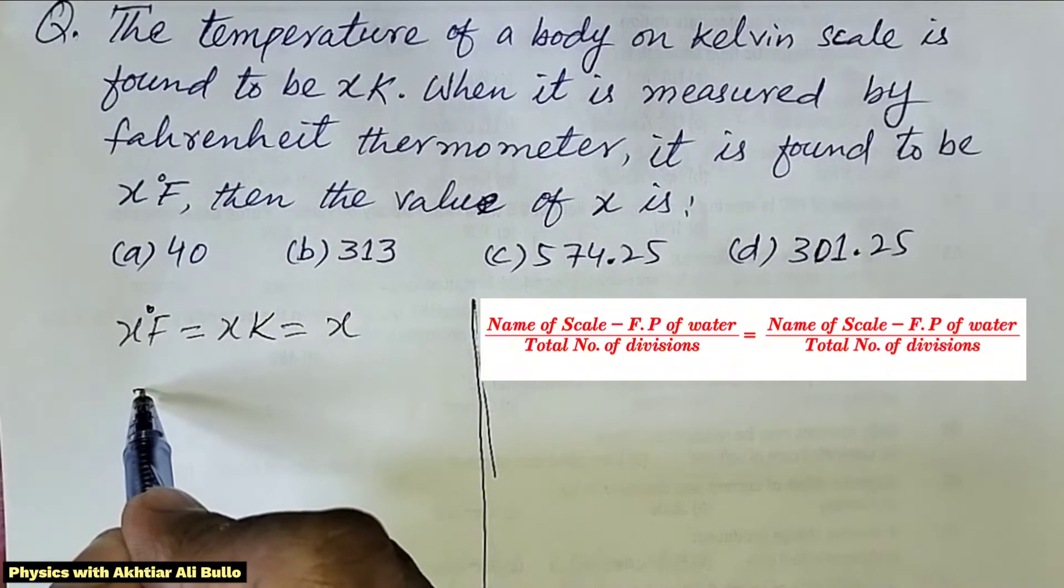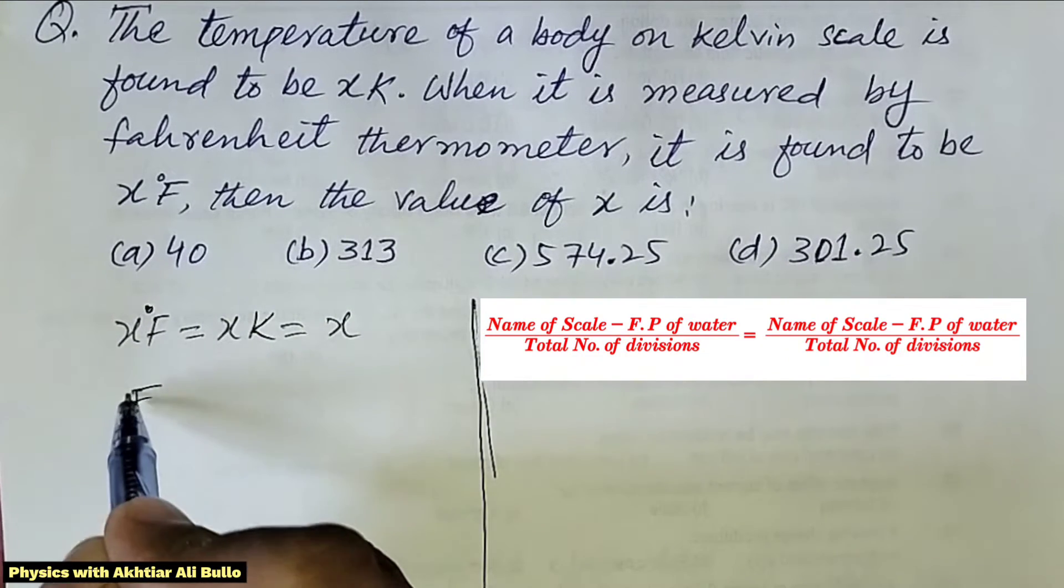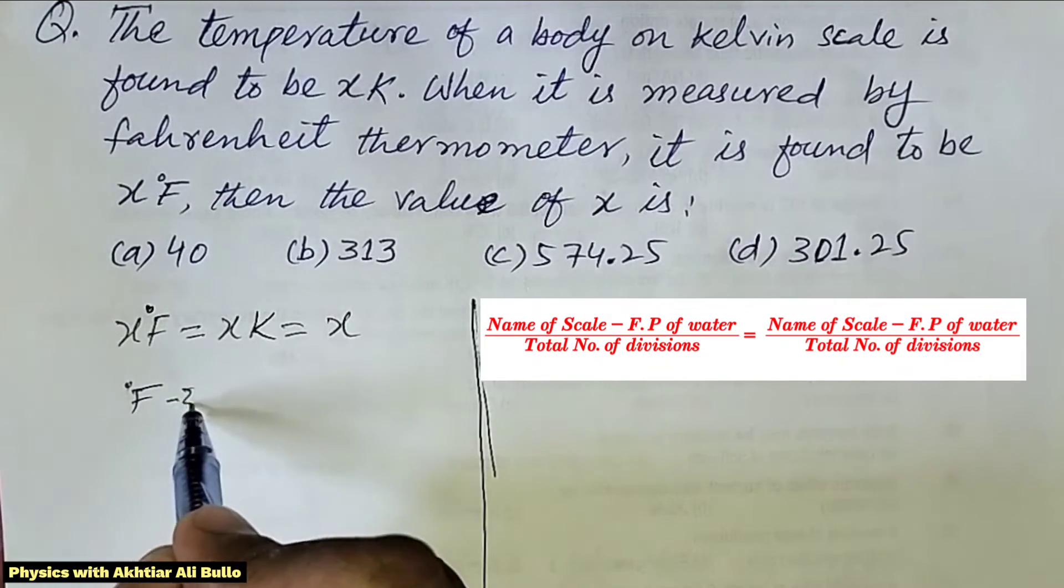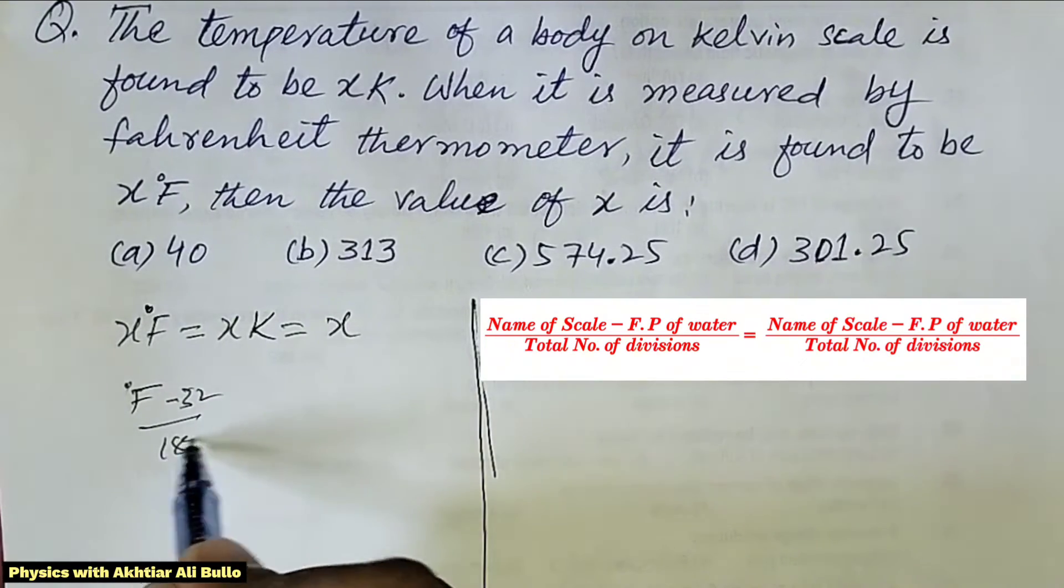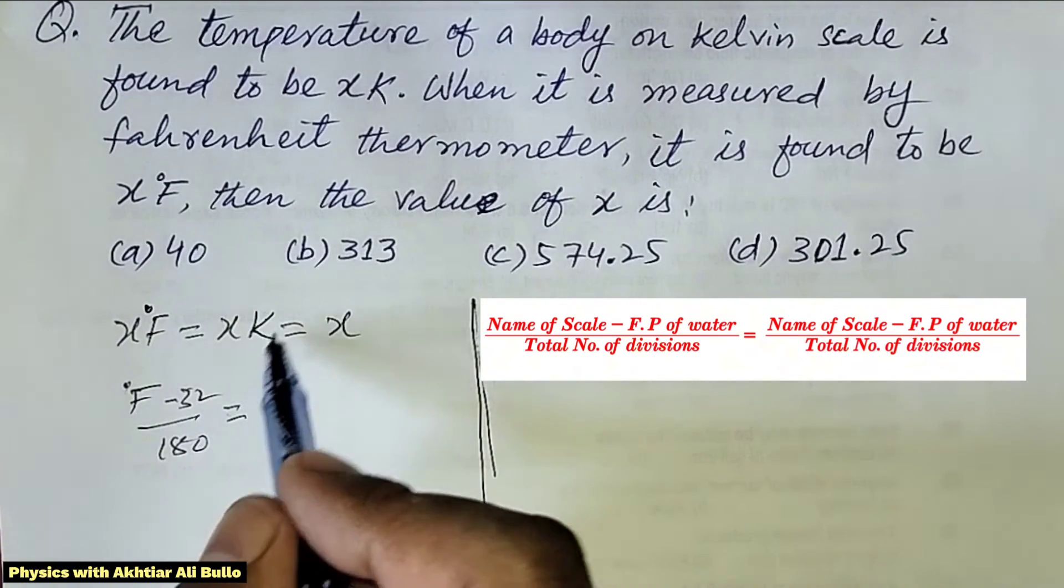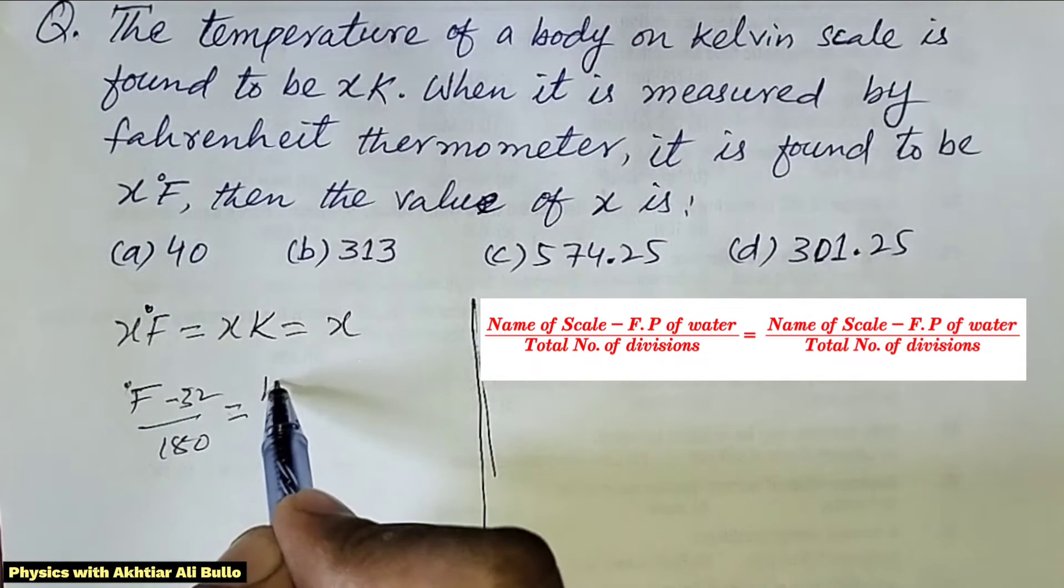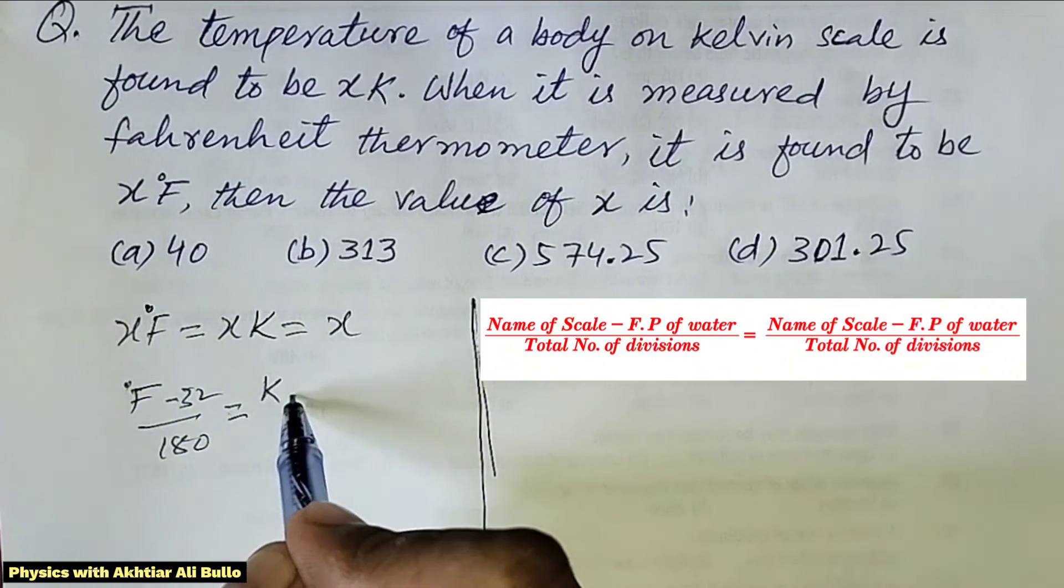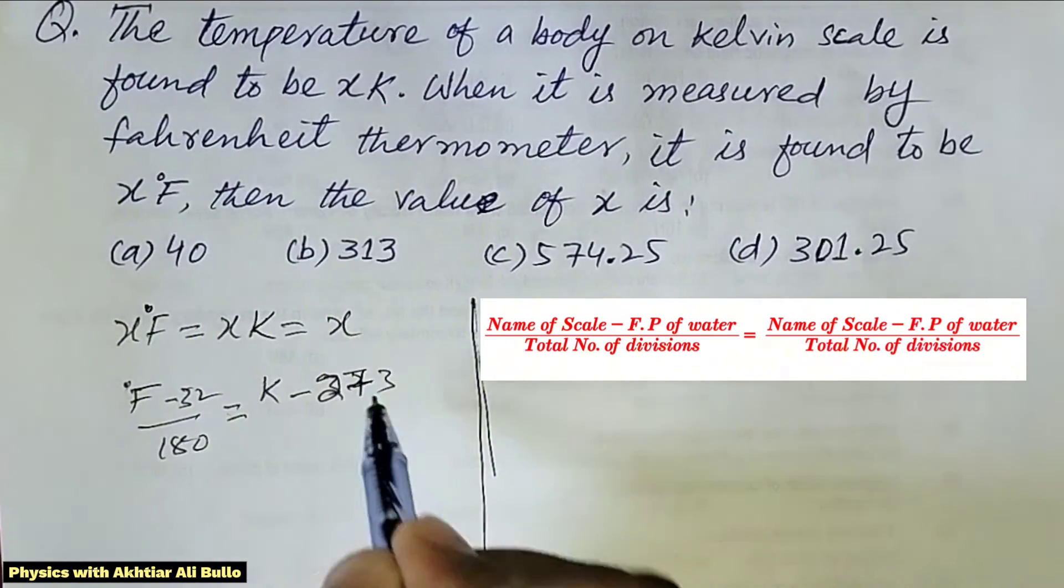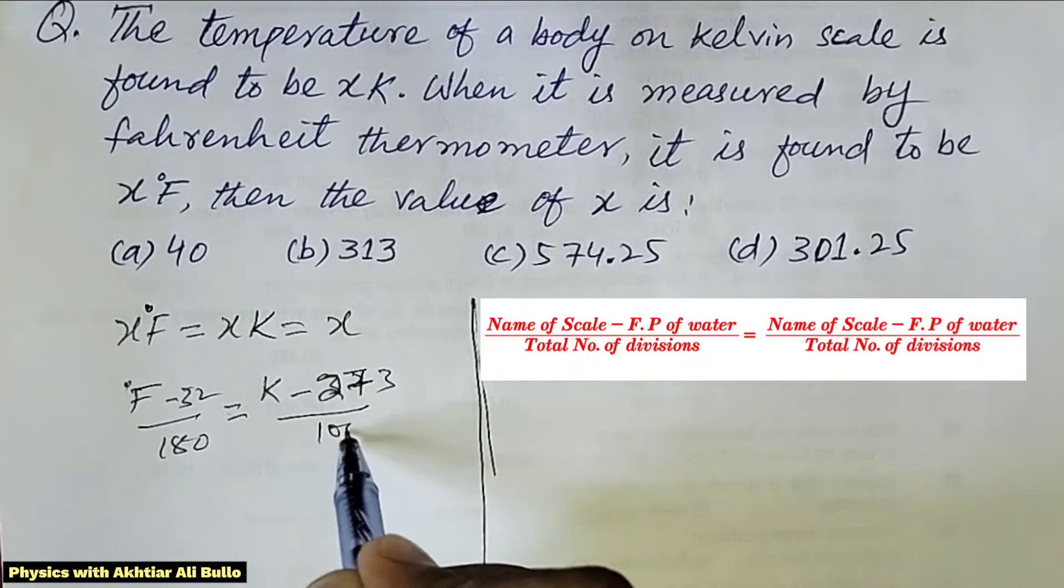Name of scale Fahrenheit minus freezing point 32 upon 180 equals the other scale Kelvin minus 273 divided by 100.